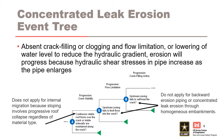For concentrated leak erosion, absent crack filling or clogging and flow limitation, or lowering of the water level to reduce the hydraulic gradient, erosion will progress because hydraulic shear stresses in the pipe increase as the pipe enlarges. The likelihood of progression for concentrated leak erosion through the embankment usually considers three nodes: holding a roof, upstream flow limitation, and crack filling action. Two are related to the mechanical condition and one to the hydraulic condition. All three nodes appear in some generic internal erosion event trees, but are usually worded to apply only to concentrated leak erosion in zoned embankments.